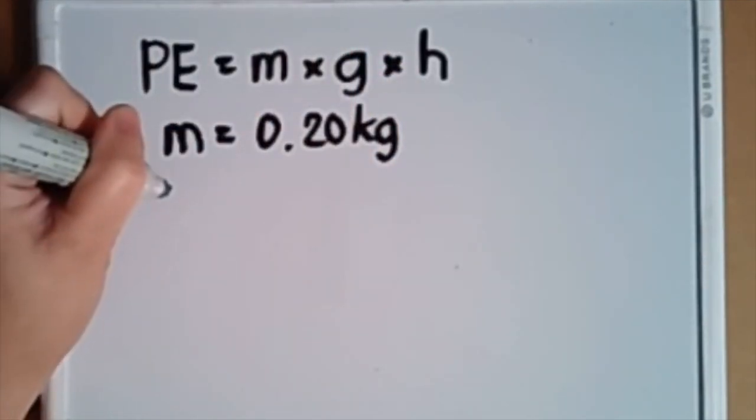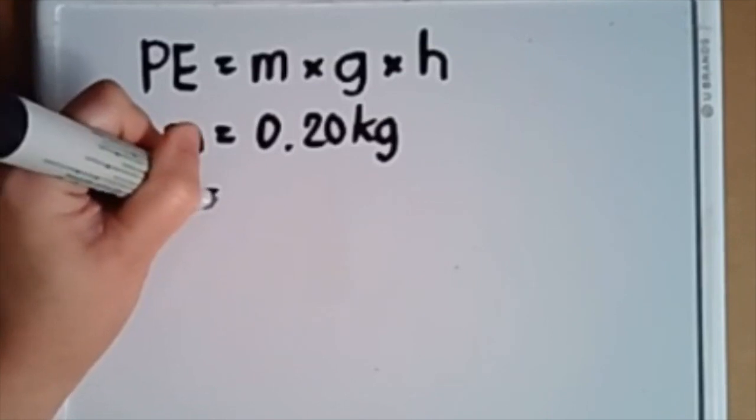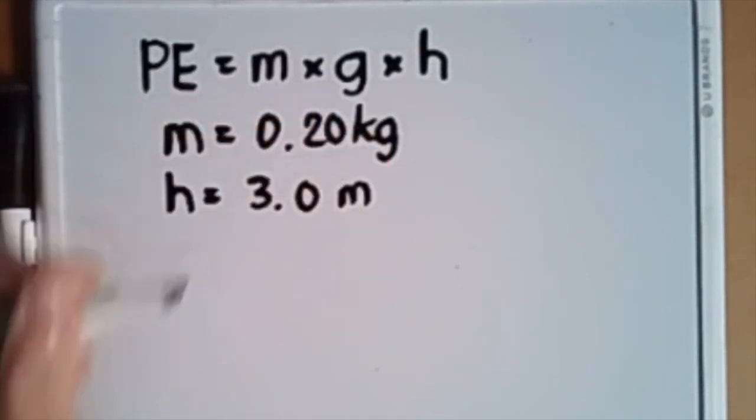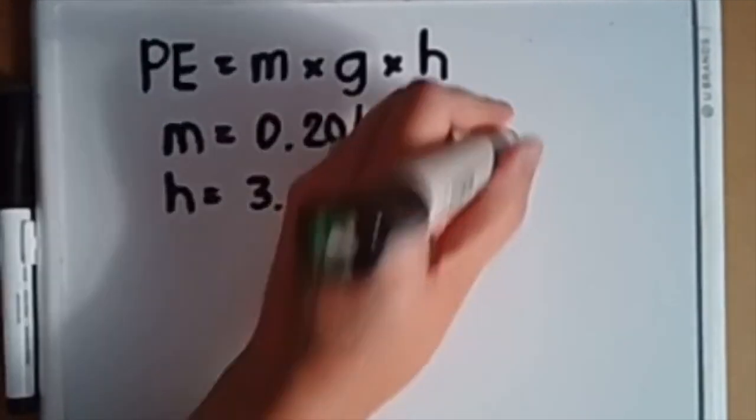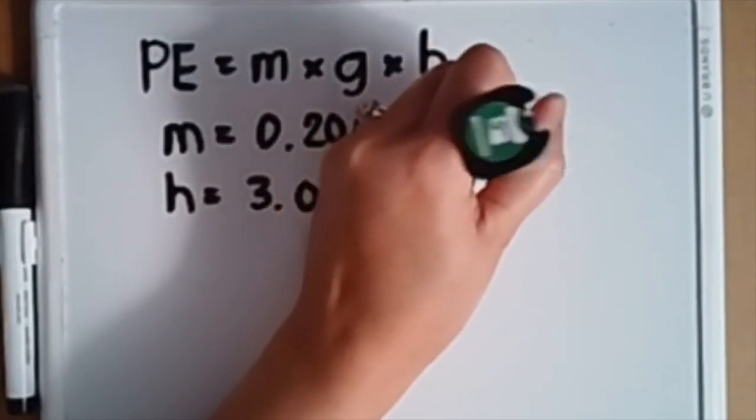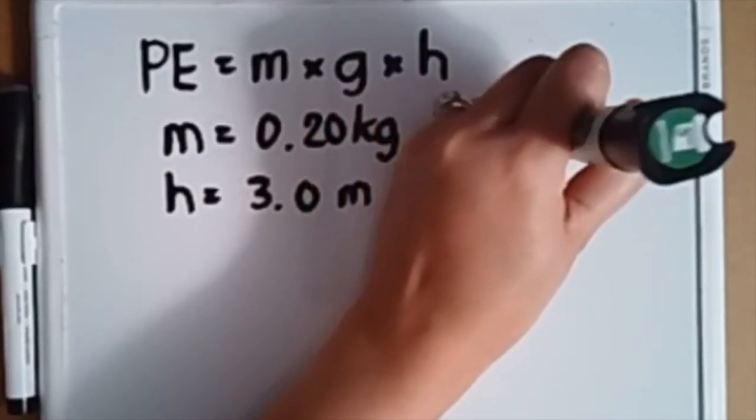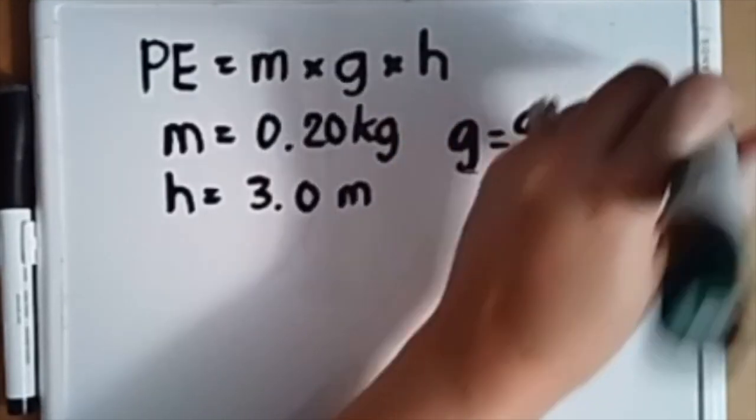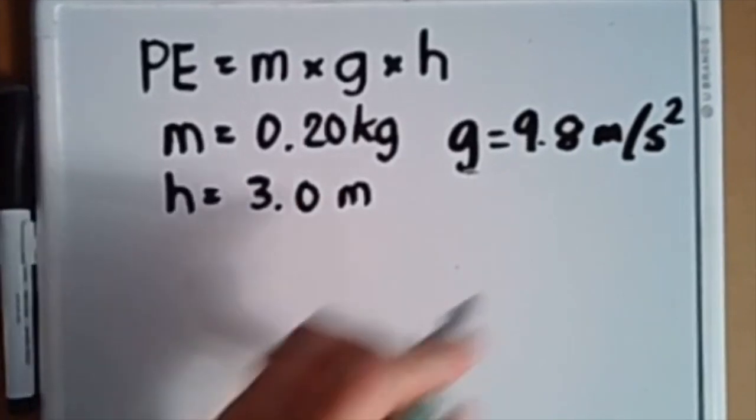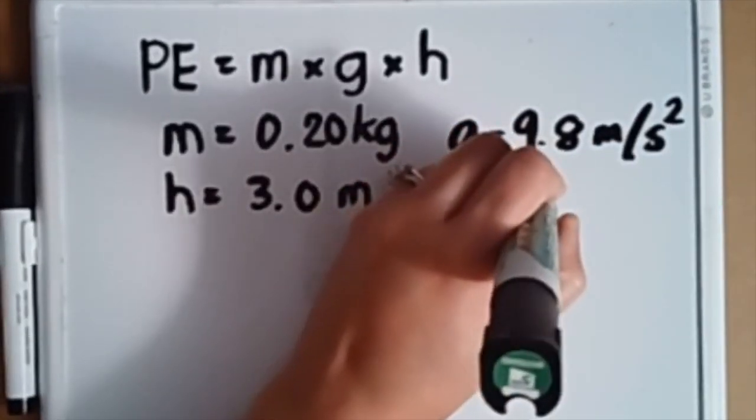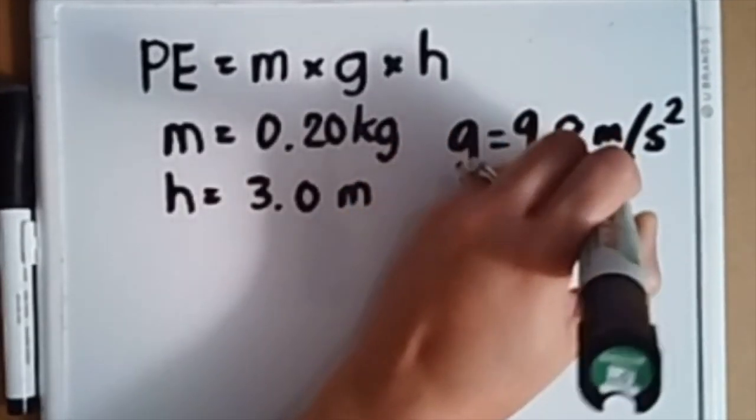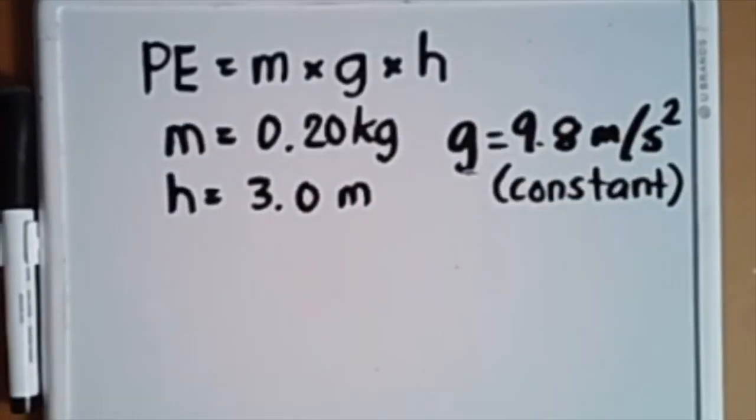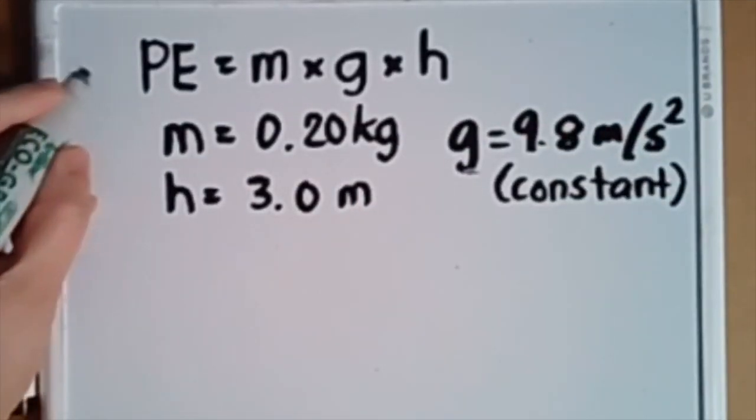The height is 3.0 meters. G, like I said, is a constant—you will always use 9.8 meters per second squared. Remember that these units must always be consistent because we're using the metric system, so our final energy will be in joules.